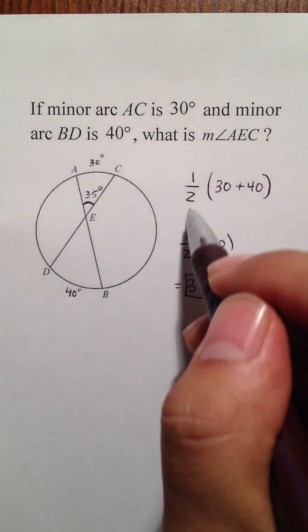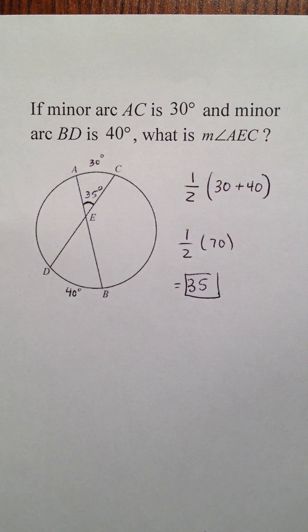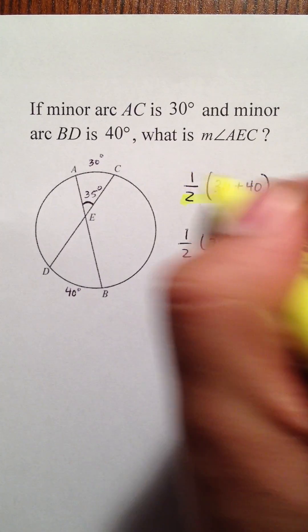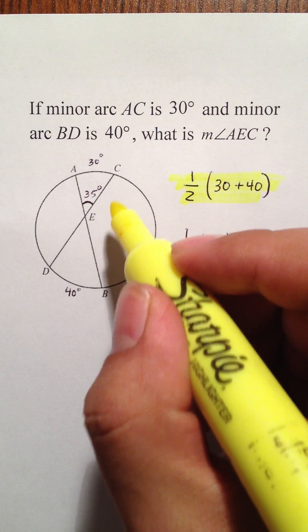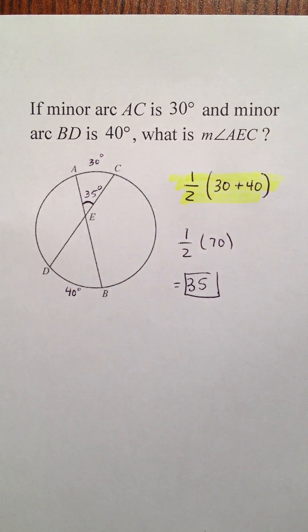But again, this formula that I'm showing you right here only applies to when you're trying to find an angle that is inside a circle, not outside a circle.